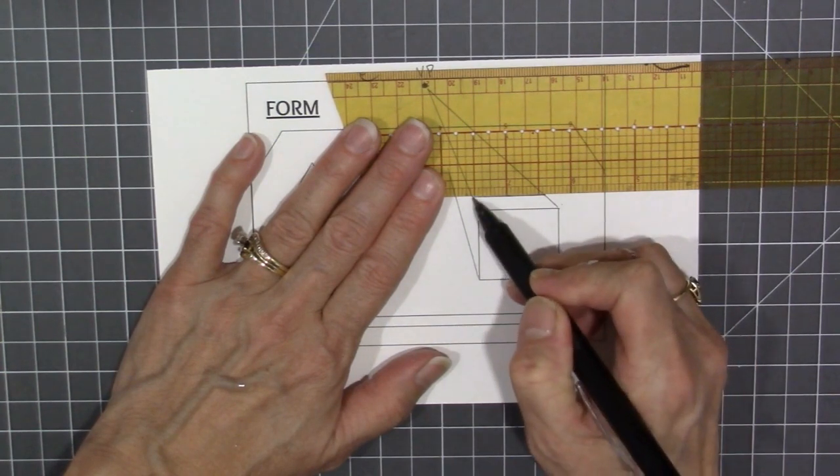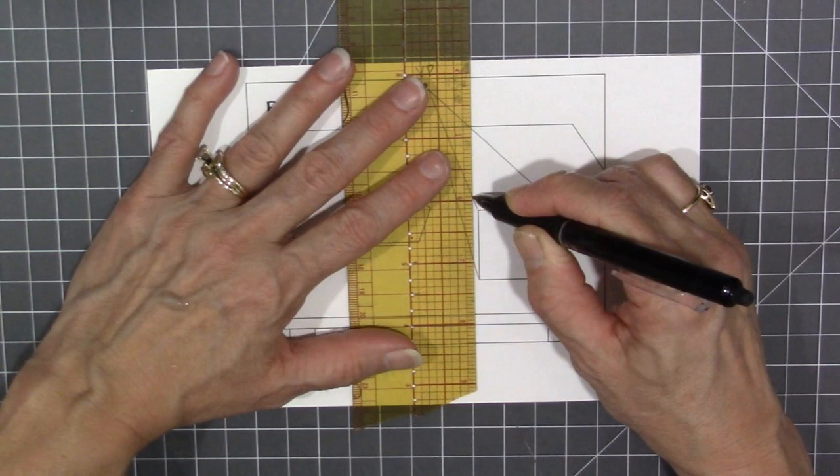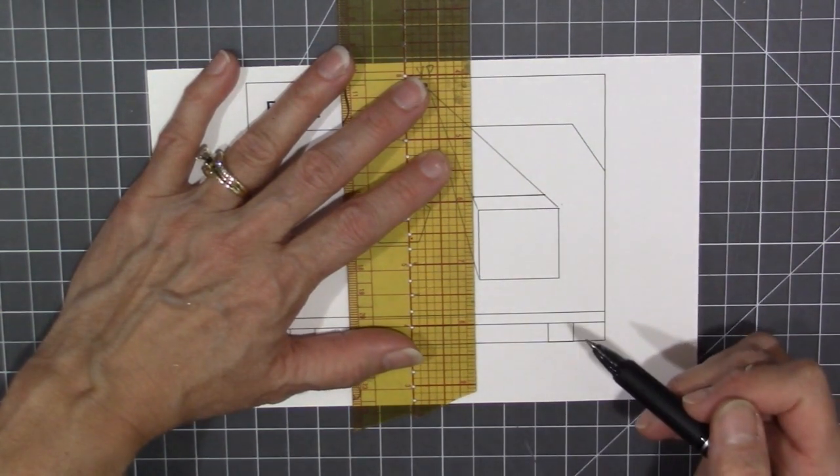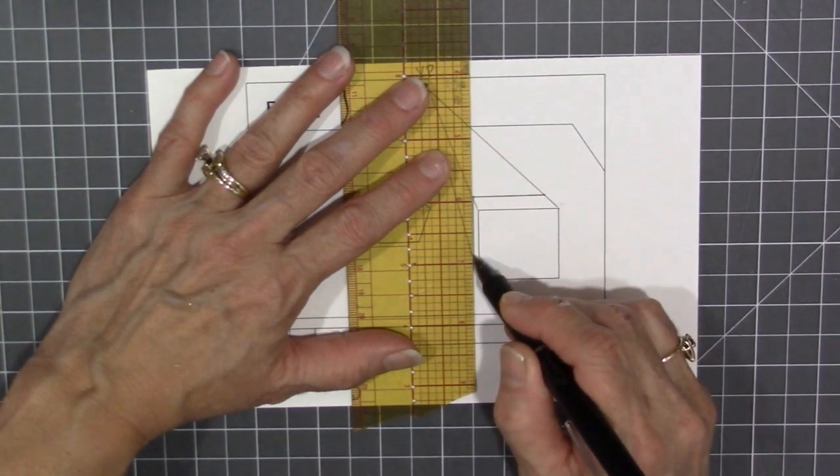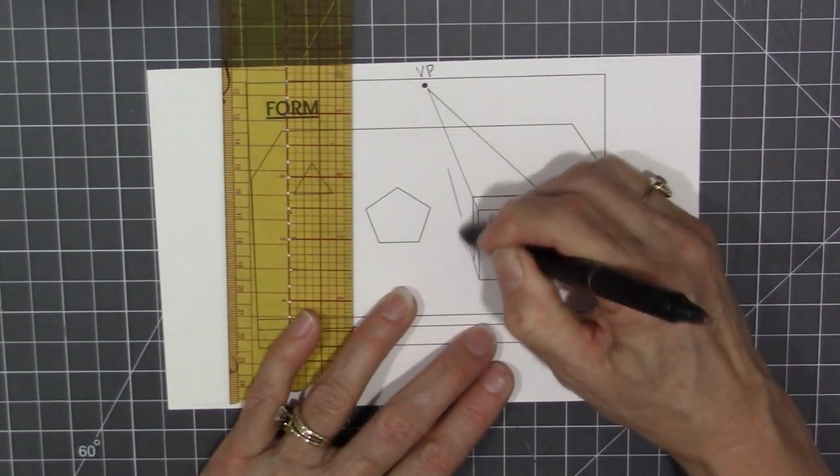So at this corner, I'm going to swivel my ruler around to make it parallel to the front edge on the side and connect to the vanishing lines to finish my rectangle.